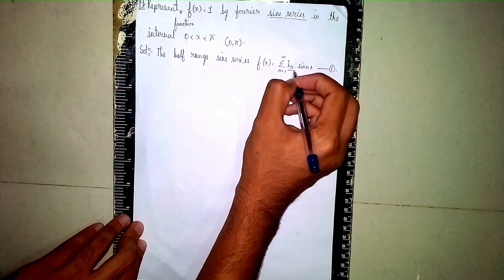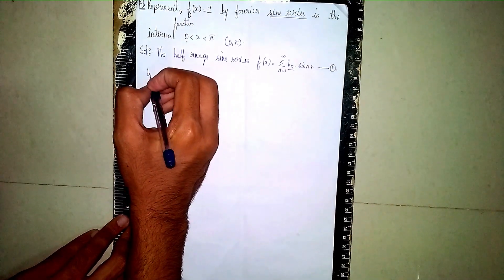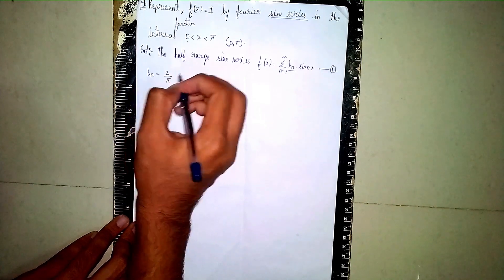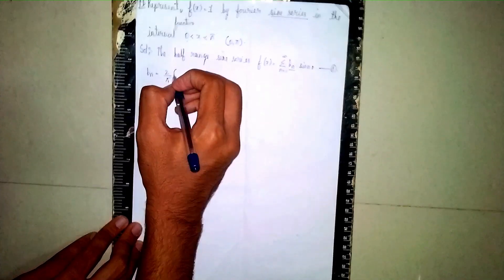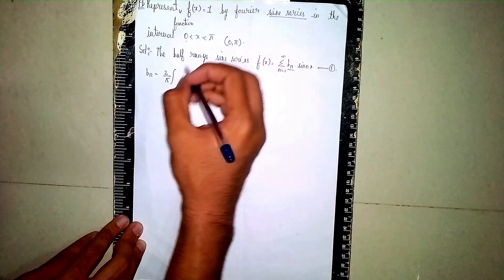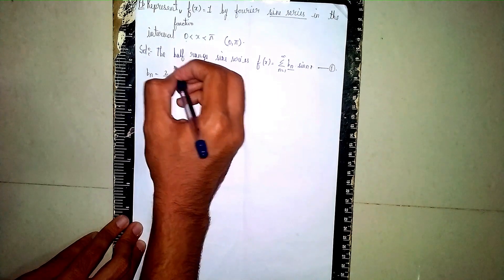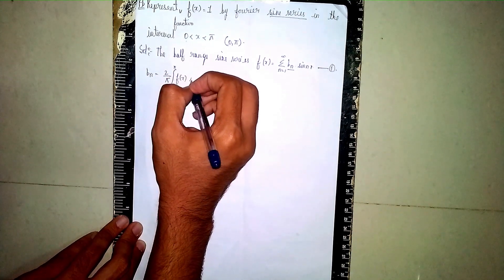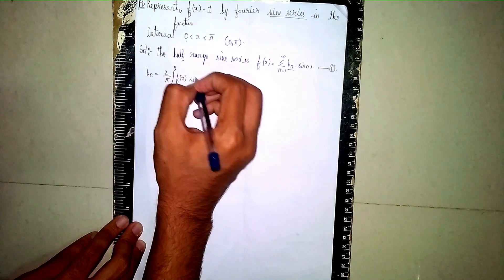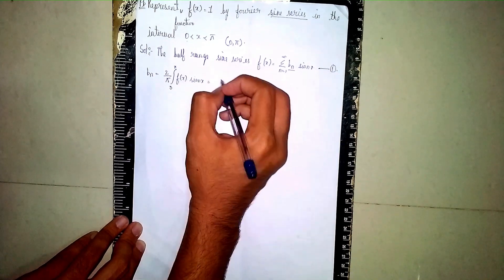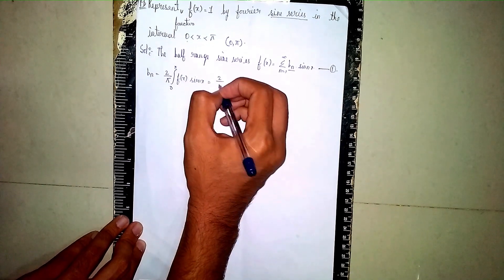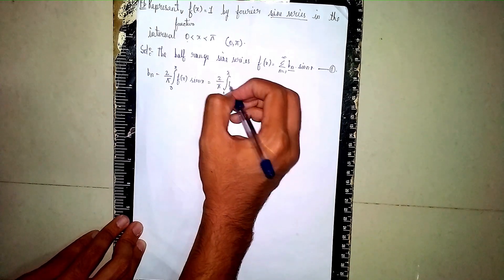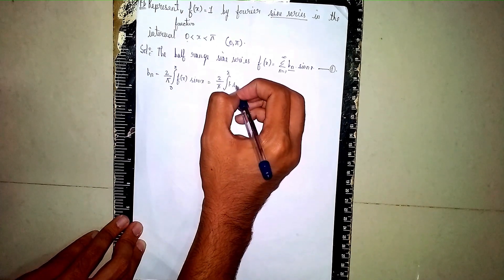Now we have to find b_n. The b_n formula is: b_n = (2/π) times the integral from 0 to π of f(x) times sin(nx) dx. This equals (2/π) times the integral from 0 to π of 1 times sin(nx) dx.